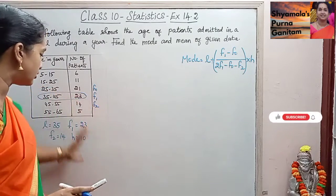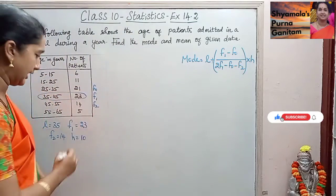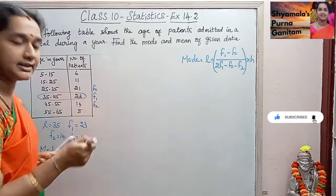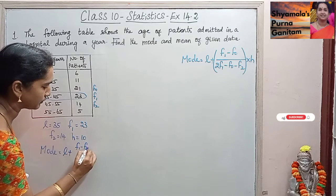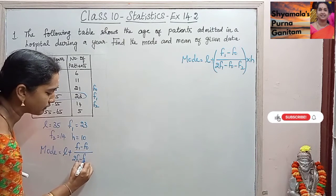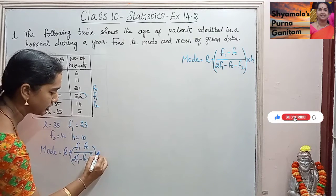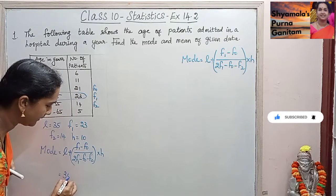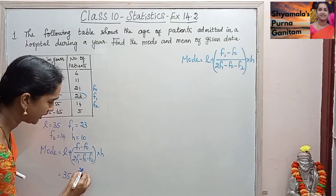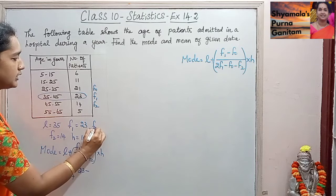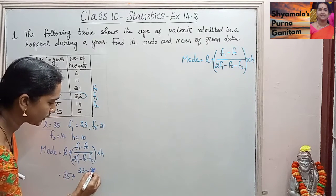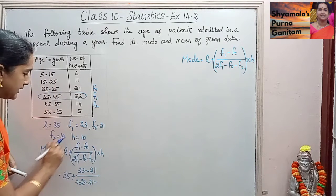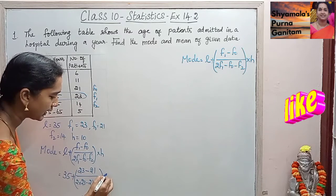These are all the values we are going to substitute to calculate mode. Writing the formula again: Mode = L plus (F1 minus F0) divided by (2F1 minus F0 minus F2) into H. Substituting: L is 35, F1 is 23, F0 is 21, F2 is 40, and H is 10.